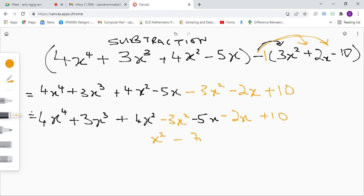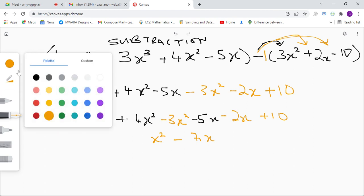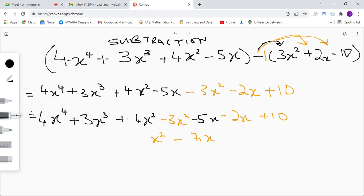And then we just write the expression, the other terms as they are. So we're going to have 4x to the power of 4, plus 3x cubed, plus x squared, minus 7x, plus 10.